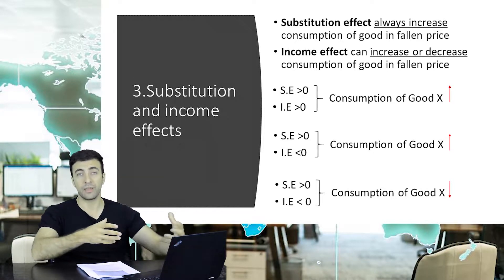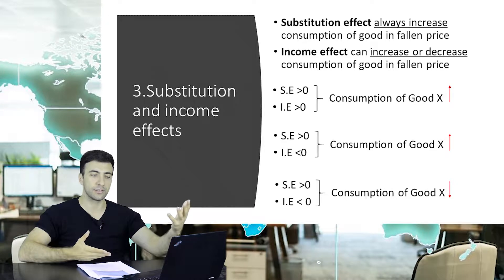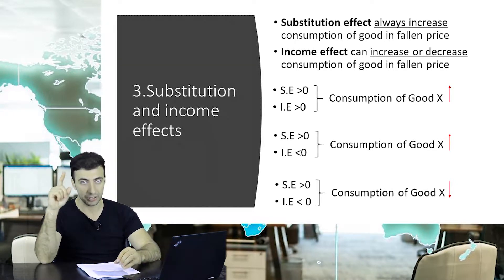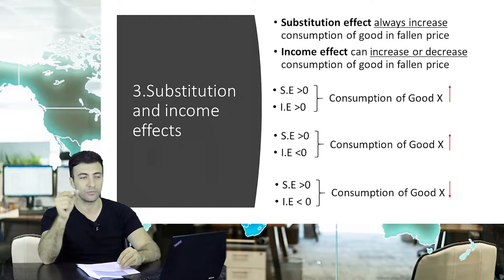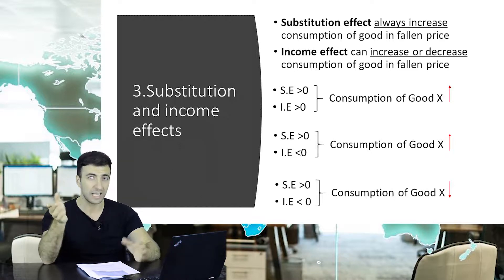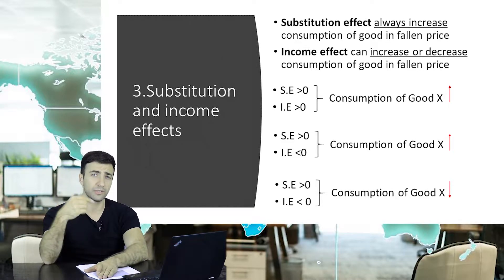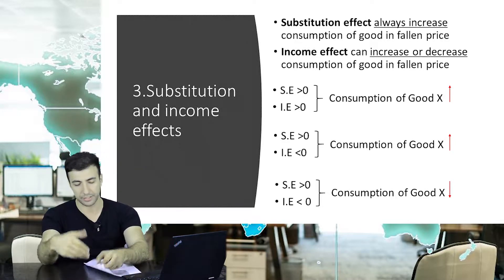Scenario three: if the substitution effect is positive but the income effect is negative and the degree of the income effect is greater than the substitution effect, then consumption of good X decreases. So if the income effect is negative but smaller in magnitude than the substitution effect, together they will increase consumption of X. But if the income effect is negative and greater than the substitution effect, consumption will decrease.